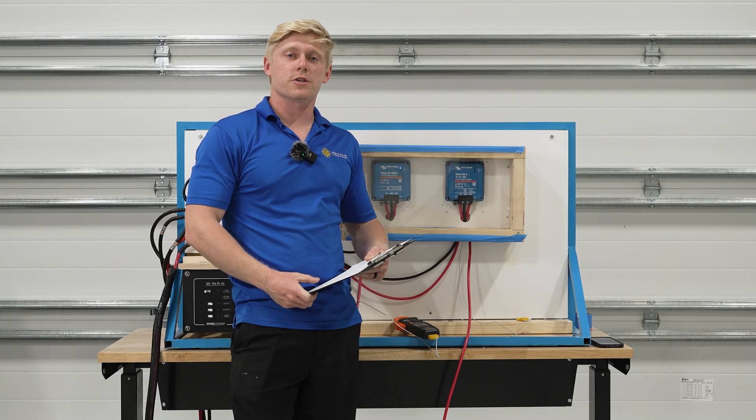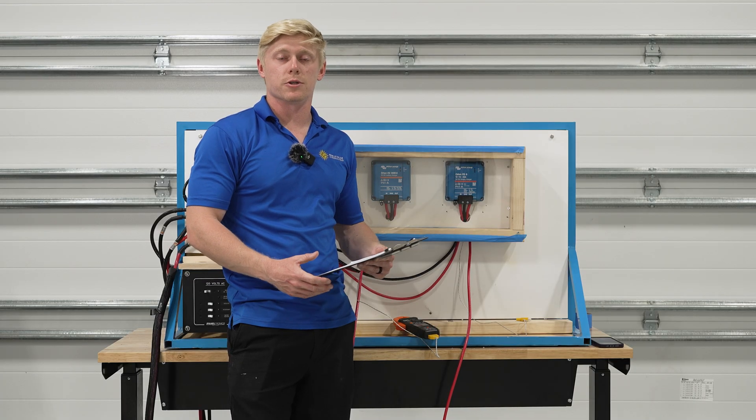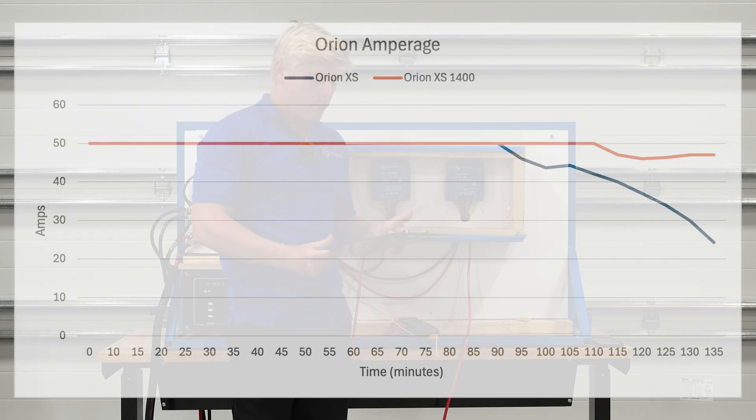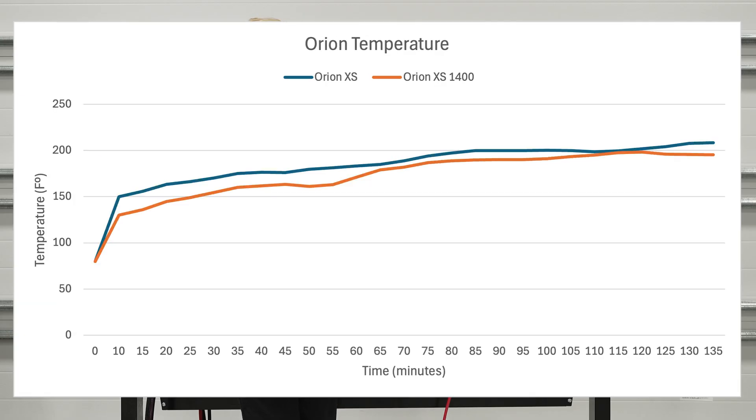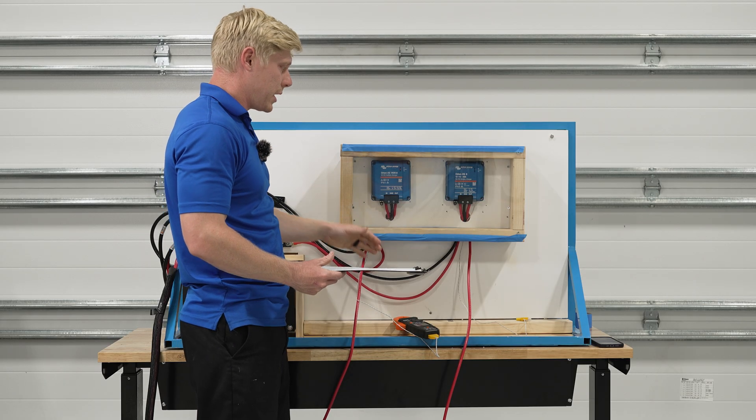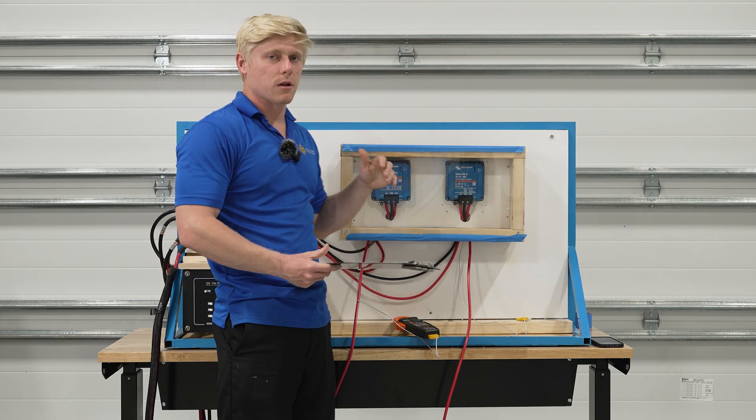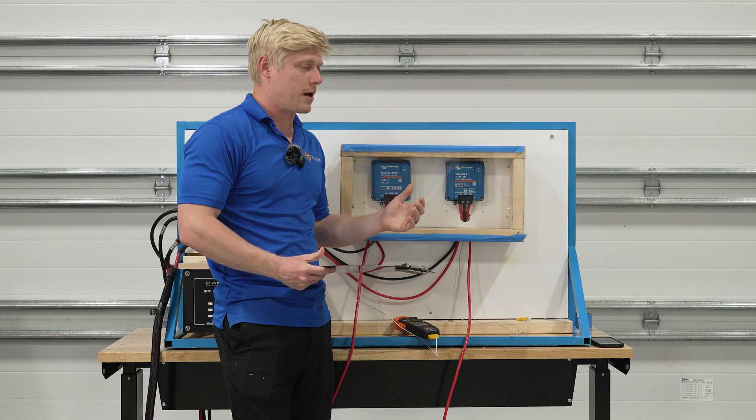All right, so we finished up our test. It took about two hours. Right around the point where the Orion XS started to derate itself, that was at 90 minutes, we noticed that things started to really level off. After that there was a plateau in the temperatures, nothing was really happening for a while, so we added some tape, just painter's tape, to seal up the gaps that air was flowing through.